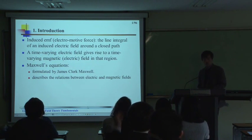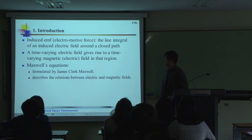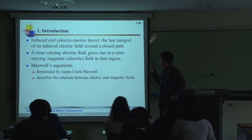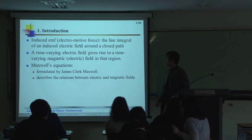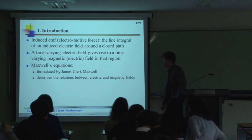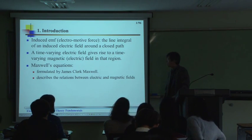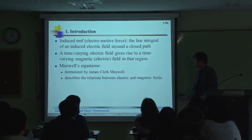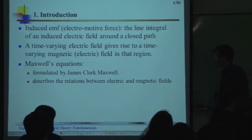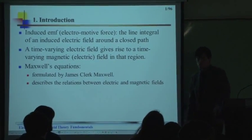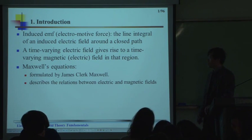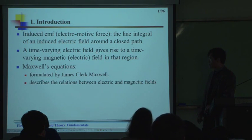Magnetic induction. The induced EMF — the line integral of an induced electric field around the closed path — is the EMF, induced by the magnetic flux change. A time-varying electric field gives rise to a time-varying magnetic field in that region, and the change of the magnetic field generates the induced EMF.